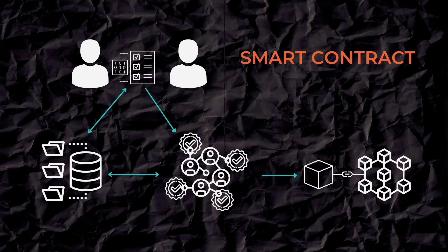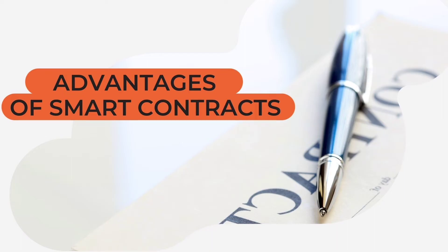Here is how it works: two parties sign a contract, the data is taken from a data source, and then the contract is sent to nodes. Every node of the blockchain validates the contract, taking into account the data from the data source. If the contract is validated, it becomes one block in the blockchain, and no data can be deleted from the chain afterwards.